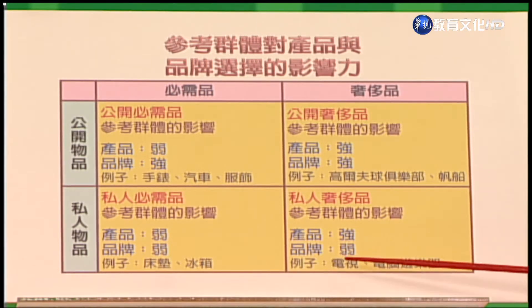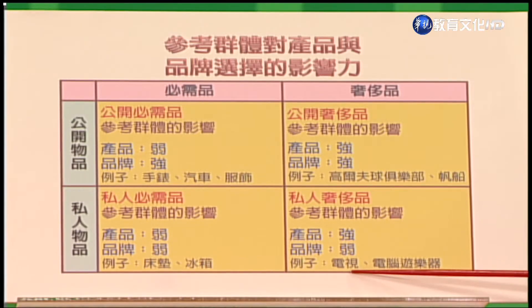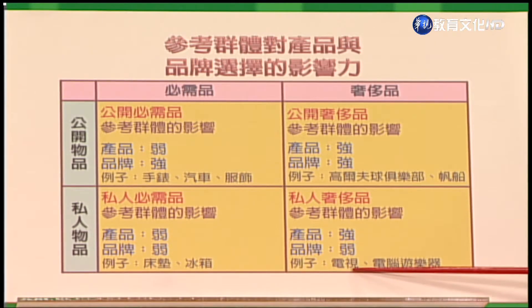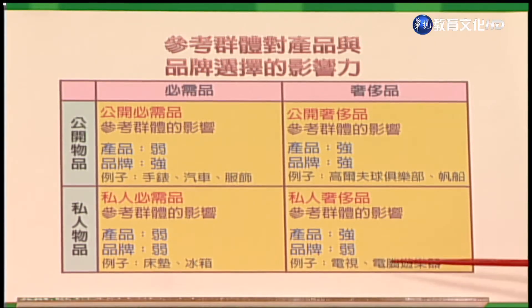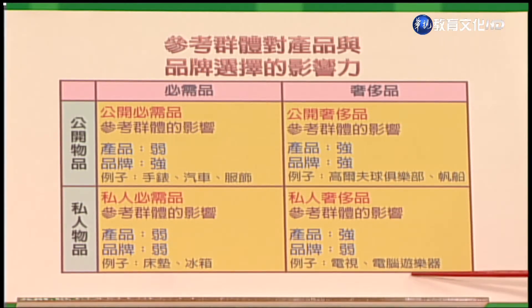如果是私人必需品，参考群体对产品影响力很小，对品牌的影响也很弱，比如床垫或冰箱，参考群体发挥不了什么影响力。最后一种是私人奢侈品，参考群体对产品的影响很强，但对品牌的影响比较弱。比如要买什么电视（电浆电视还是薄片型、大尺寸还是小尺寸），或电脑游乐器具等。